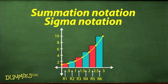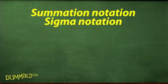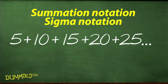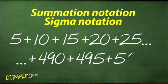Here's how it works. Say you want to add the first 100 multiples of 5, that's from 5 to 500. You could write out the sum as 5 plus 10 plus 15 plus 20 plus 25 and so on, finishing with plus 490, 495, and 500.